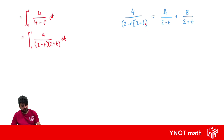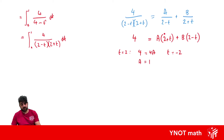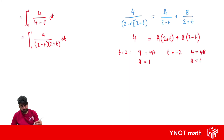Multiplying both sides by (2−T)(2+T) gives 4 = A(2+T) + B(2−T). Letting T = 2: 4 = 4A, so A = 1. Letting T = −2: 4 = 4B, so B = 1. Therefore the fraction can be written as 1/(2−T) + 1/(2+T).